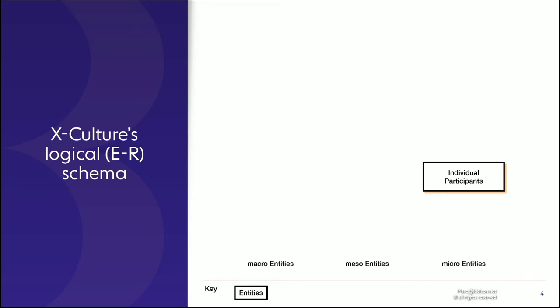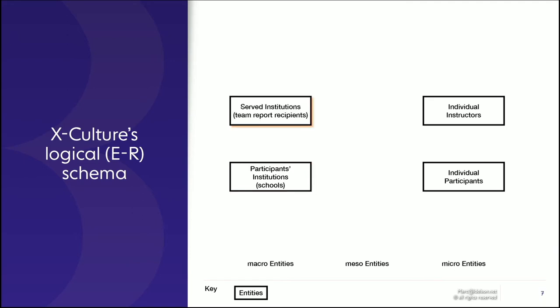The first entity we have are the individual participants in X-Culture. We also have other individuals, which are the instructors. At the institutional level, we have the participants' institutions, which are mostly schools as you all know. We also have the institutions served by X-Culture, mostly for-profit companies but there are some that have a different status. Let's just call them the served institutions—in other words, the recipients of the team reports and the ones who offer the challenges on the X-Culture platform every semester.